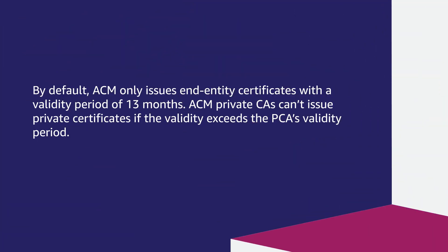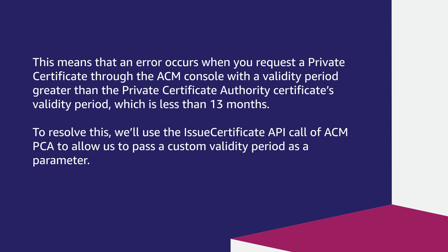By default, ACM only issues end entity certificates with a validity period of 13 months. ACM private CAs can't issue private certificates if the validity exceeds the PCA's validity period. This means that an error occurs when you request a private certificate through the ACM console with a validity period greater than the private certificate authority certificate's validity period, which is less than 13 months.